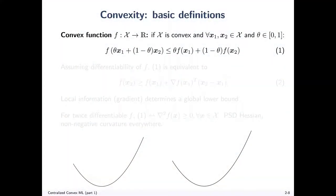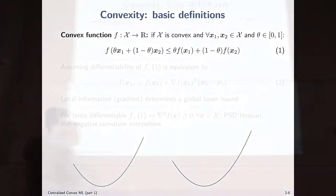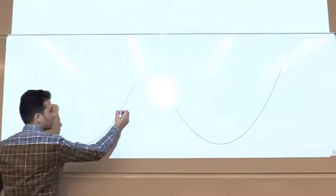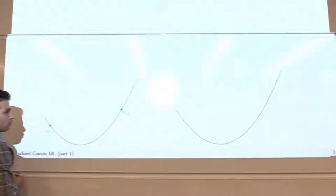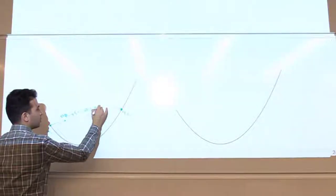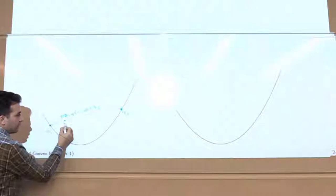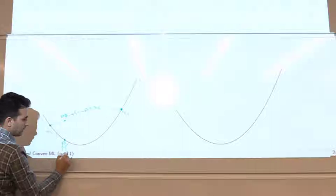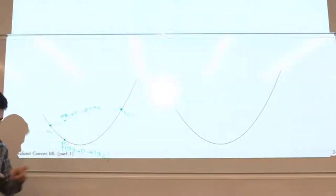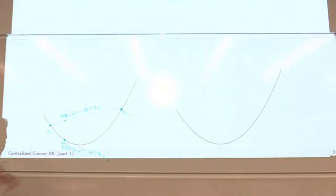Now, some more definitions of convexity — now convex functions. The main definition of a convex function is: if you pick any two points x1 and x2 and form any convex combination theta*x1 + (1-theta)*x2, then the function evaluated at the convex combination should always be smaller than or equal to the convex combination of the function values: theta*f(x1) + (1-theta)*f(x2). If that's true for all theta and all x1 and x2 in the domain, we call it a convex function.